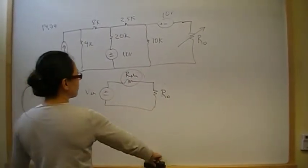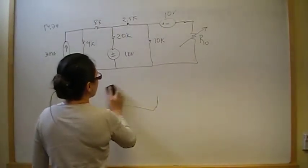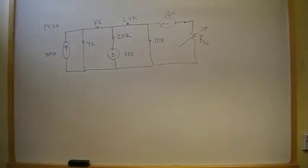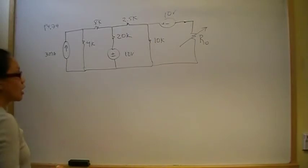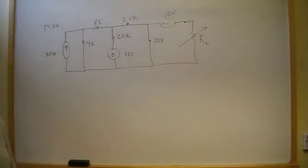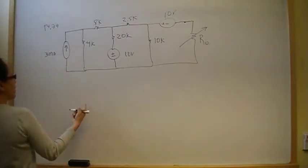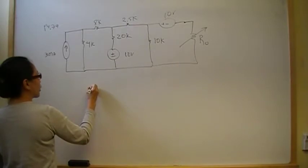Lucky for us, this circuit has only independent sources. That means we can disable the power sources and see what resistance is seen by the load. We open the load, see what resistance is seen, and that gives us our R-Thevenin. So we open up current sources and short independent voltage sources. This method only works if your circuit has only independent sources, which this circuit does. So we open up the 3 milliamp independent current source.